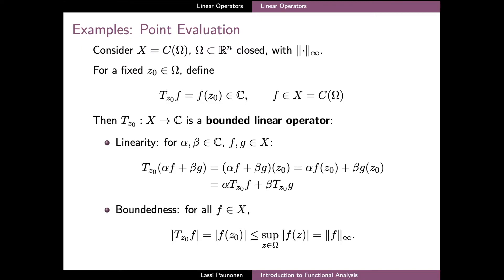As our first concrete example of a linear operator, we can choose x to be the space of continuous functions on a closed set omega of a Euclidean space, take a fixed point z0 from inside omega, and we can then define an operator T_z0 which for a given function f produces the value of f at the point z0. We can alternatively say that this operator evaluates the function f at the point z0.